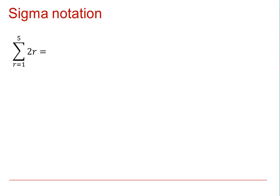The use of the Greek capital letter sigma indicates that we're going to carry out an operation to sum. And here we can see that we are going to sum terms 2R from R equals 1 to 5.